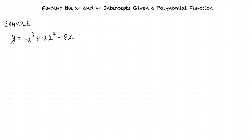Let us consider an example. We are required to find the x and y-intercepts of the polynomial function y equals 4x³ plus 12x² plus 8x.